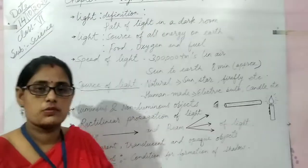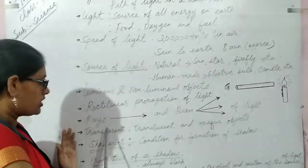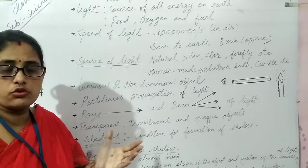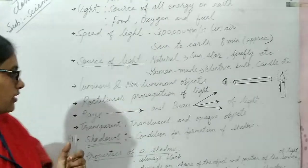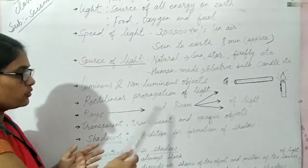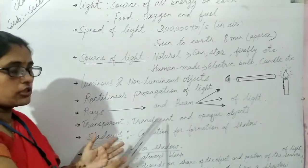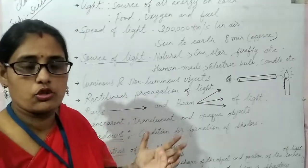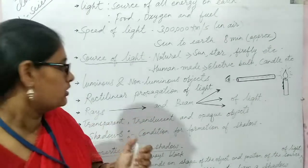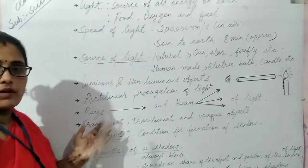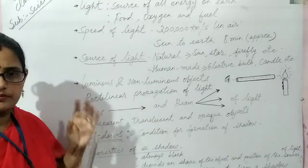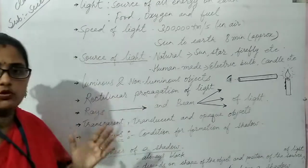Now we will discuss transparent, translucent and opaque objects. Transparent objects are those which allow light to pass through them very easily — for example, glass. Translucent objects are those which allow light to pass through them only partially — for example, oiled paper. Opaque objects are those which do not allow light to pass through them at all — for example, a book or a wall.